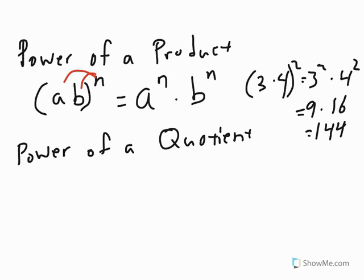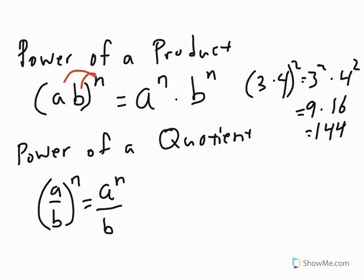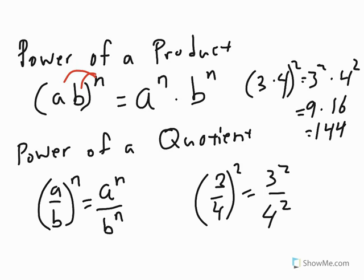With the power of a quotient property, it's pretty much the same thing. If you have a divided by b all being raised to the power of n, that's the same thing as a to the power of n divided by b to the power of n. With numbers, this would be something like 3 fourths squared equals 3 squared over 4 squared, which would be 9 sixteenths — you can't reduce it, so we leave it as a fraction. And that's the power of a product and the power of a quotient property.